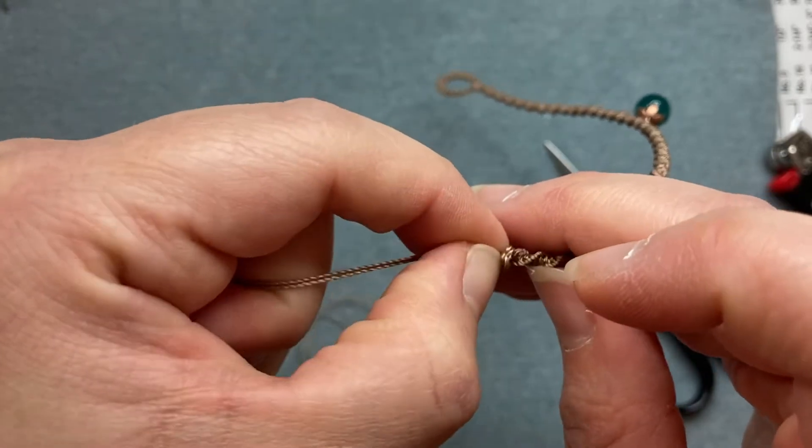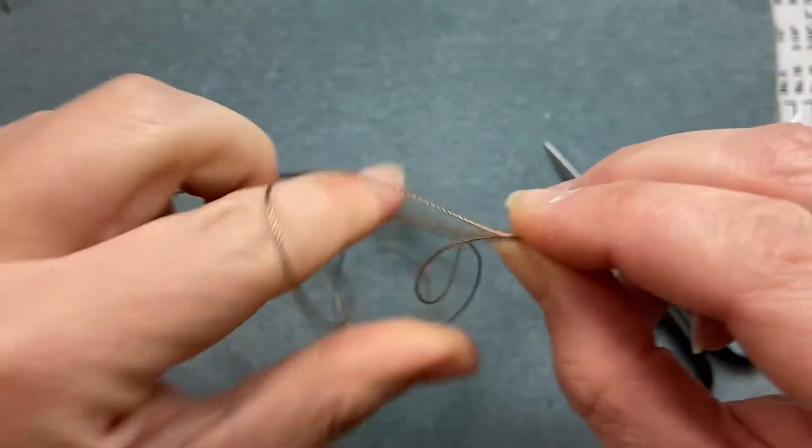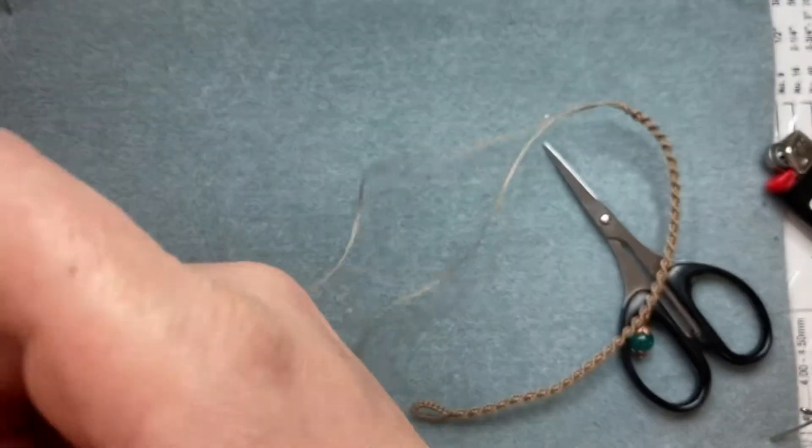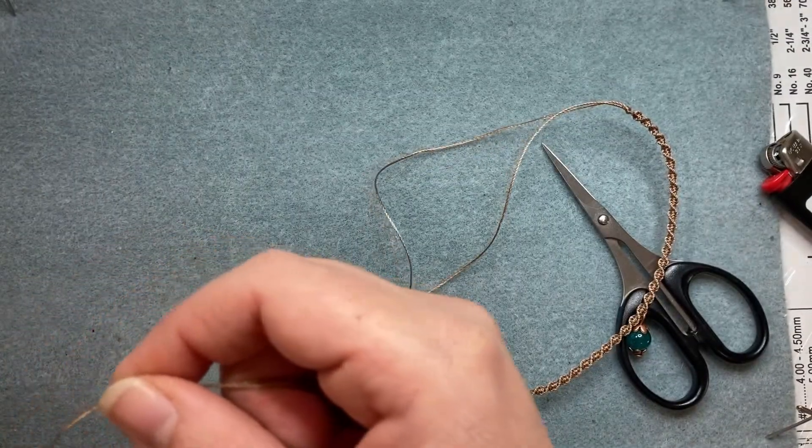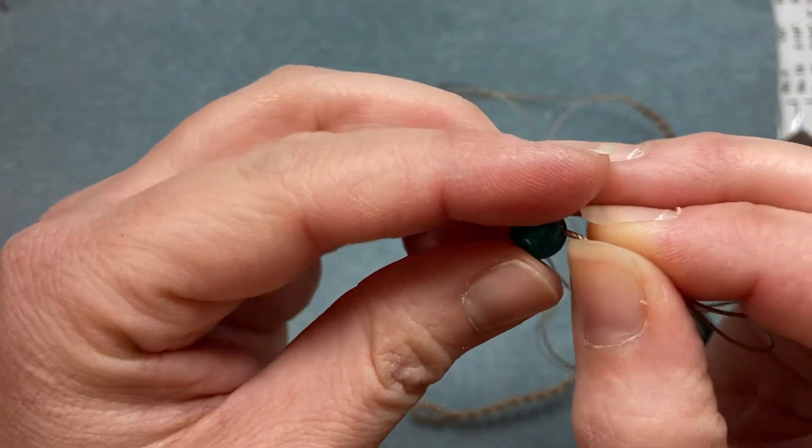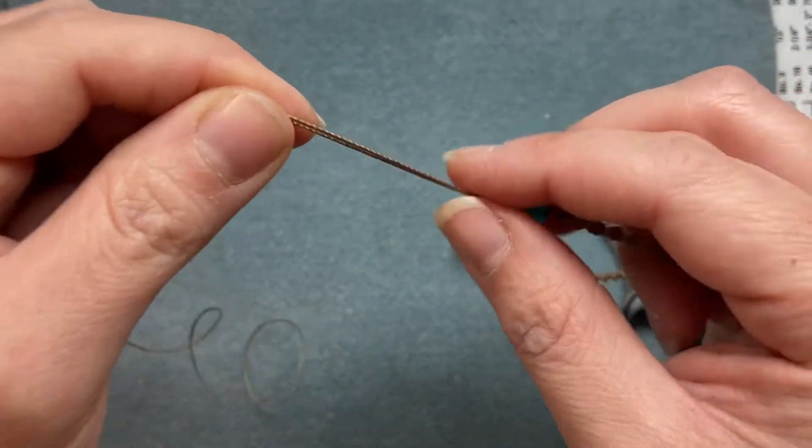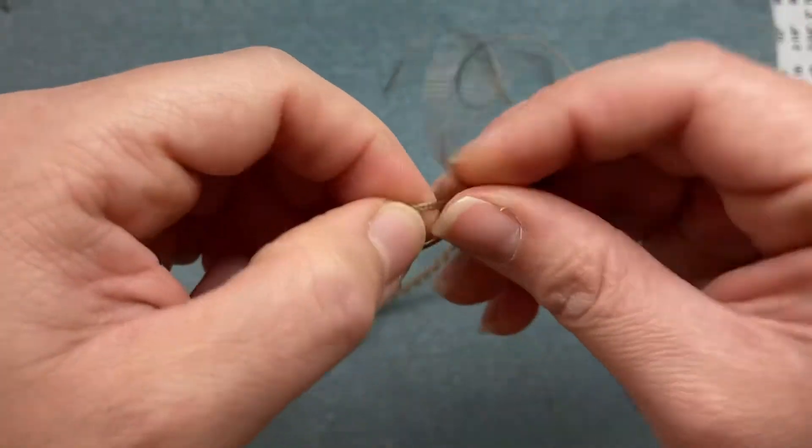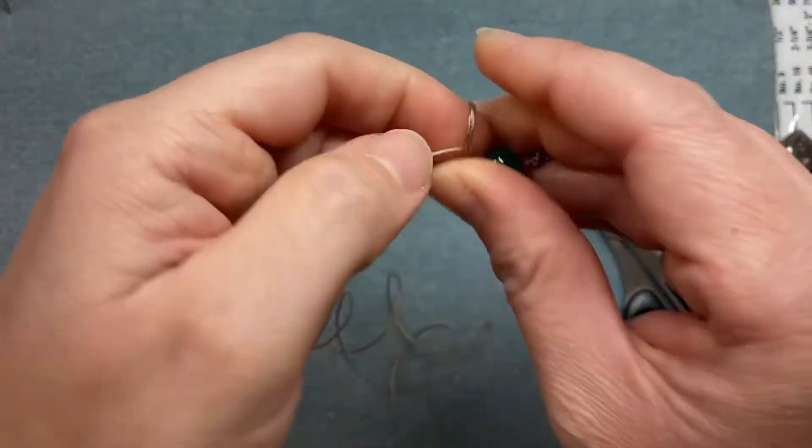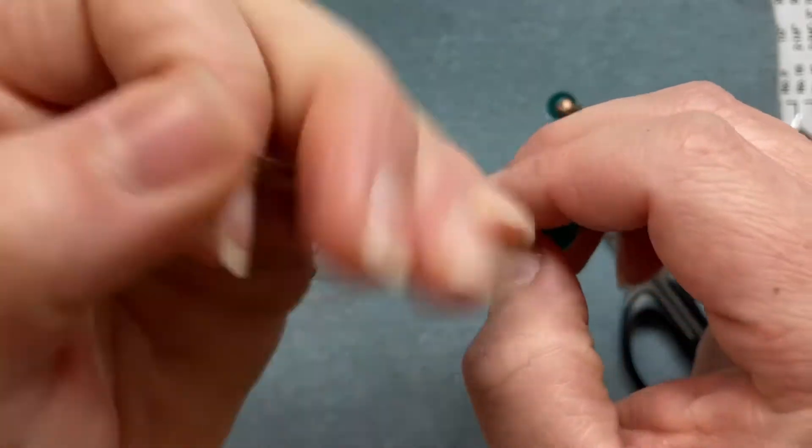And then getting that knot right on the edge here and pulling to tighten. Usually pull each cord one at a time. So there's your overhand knot. And then take one of the 8mm beads and string both of these two center cords through like so. And create another overhand knot to close that bead in place. And then tighten.